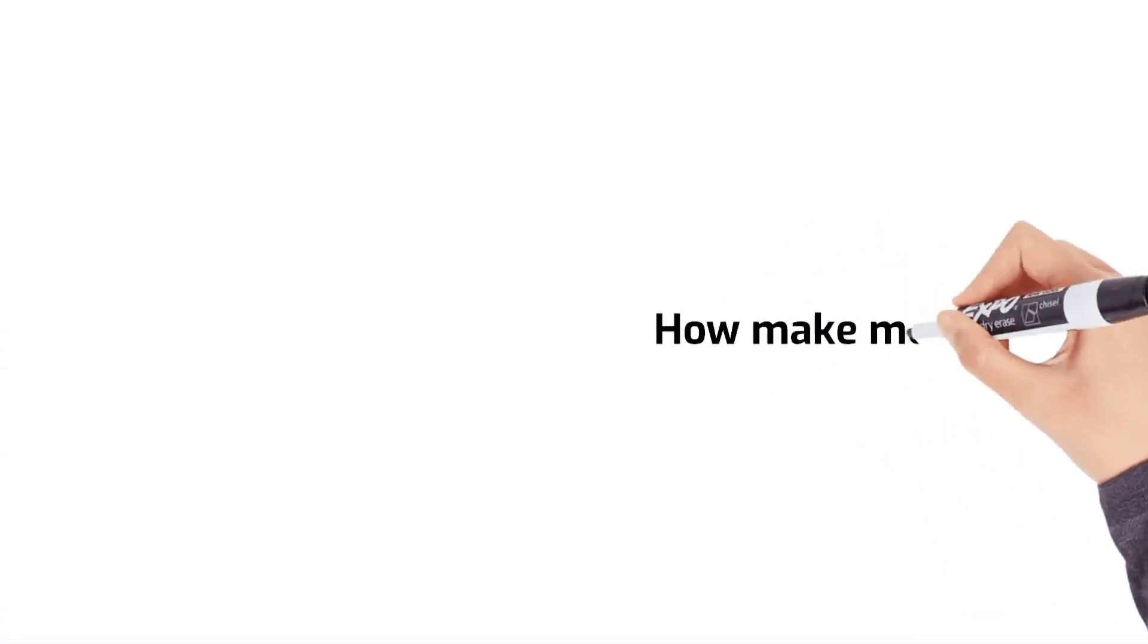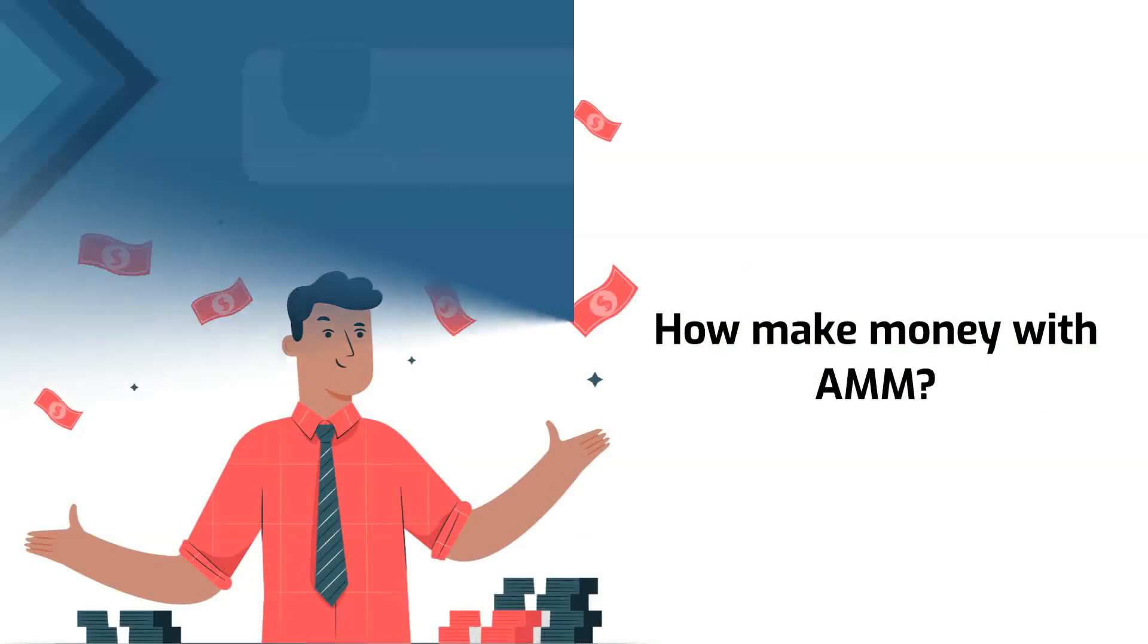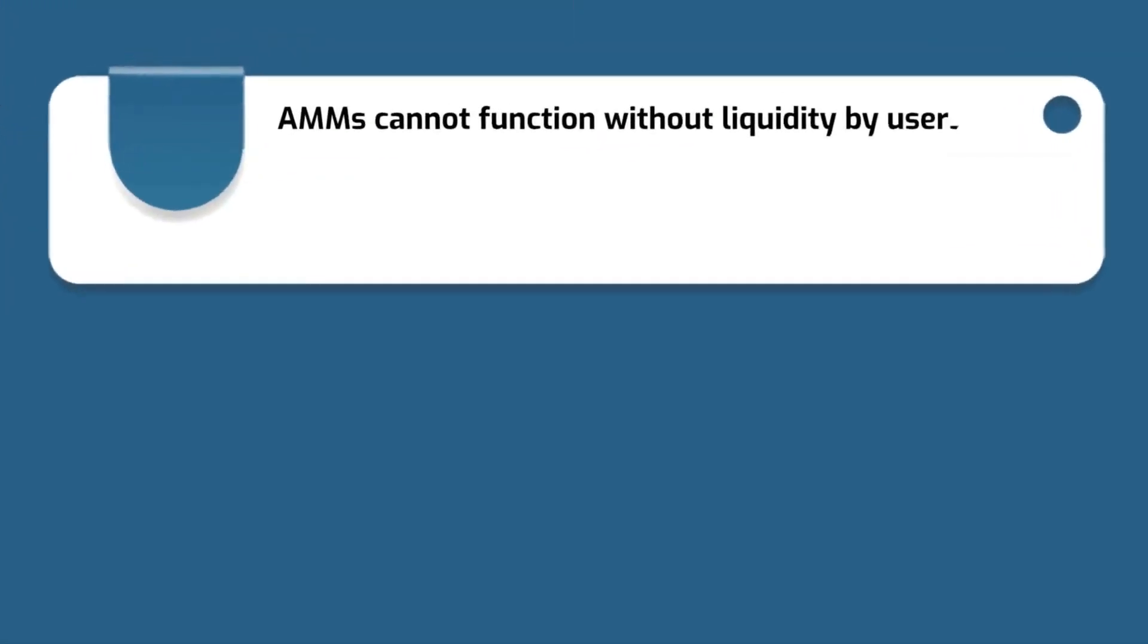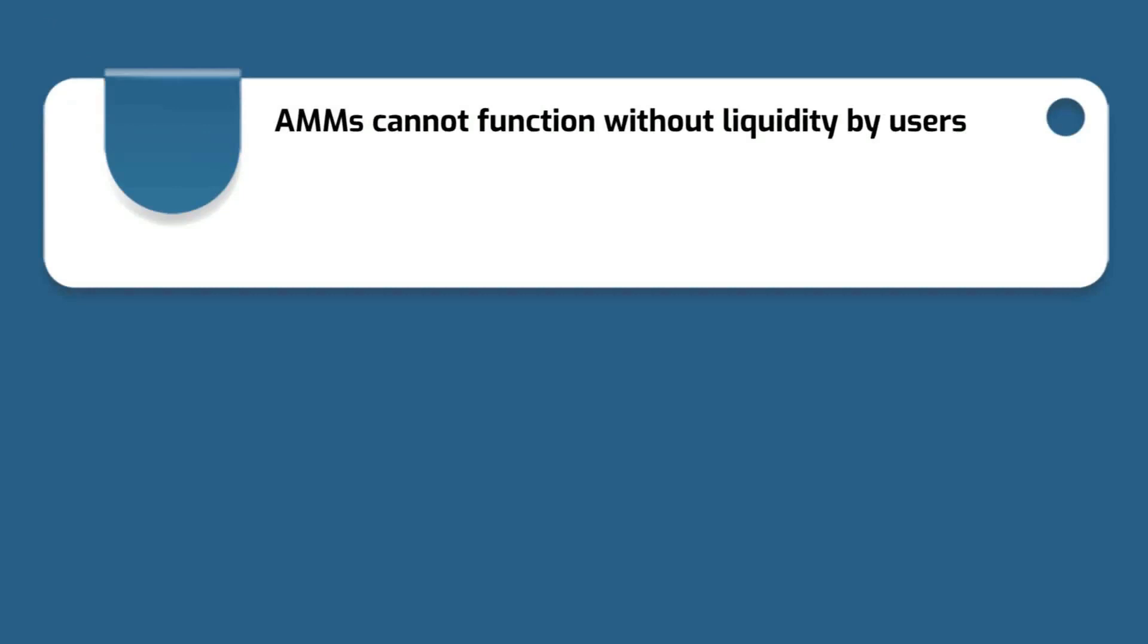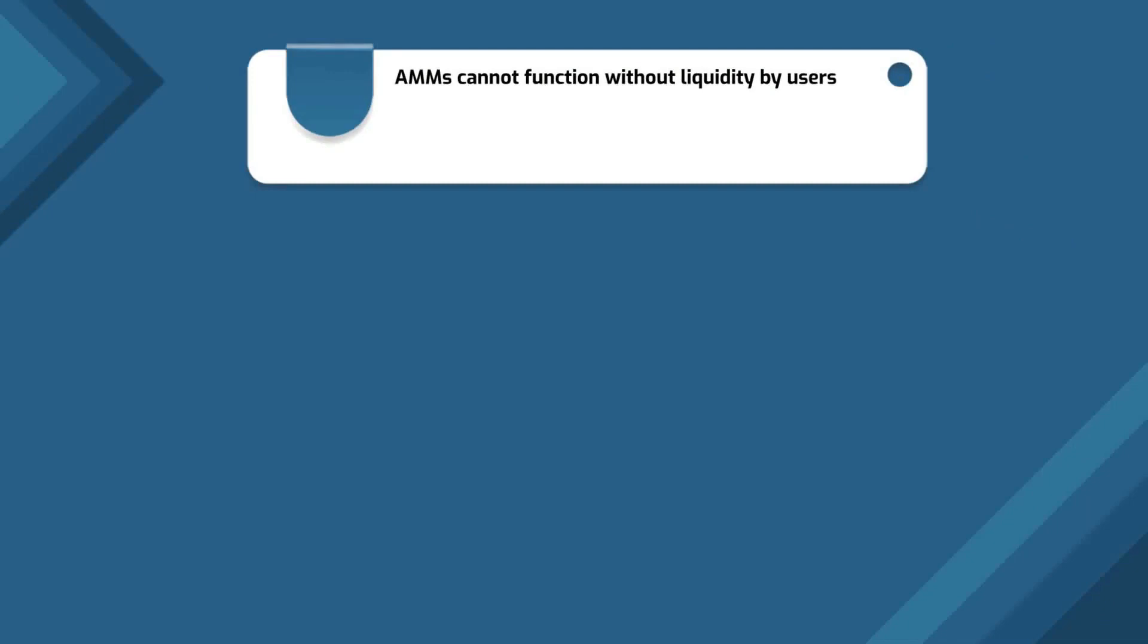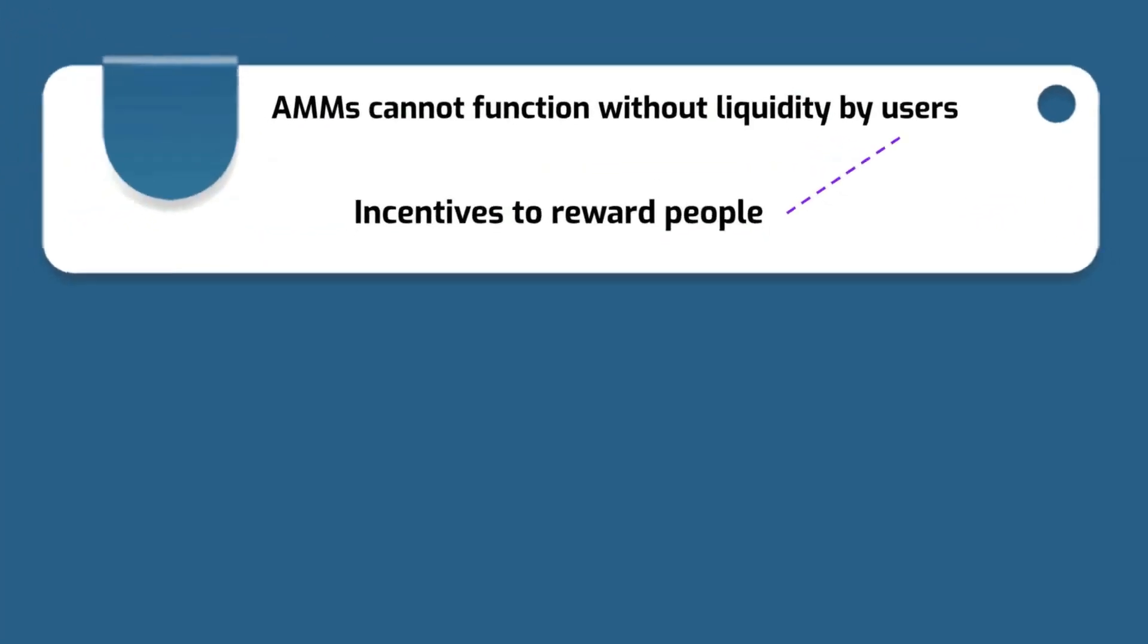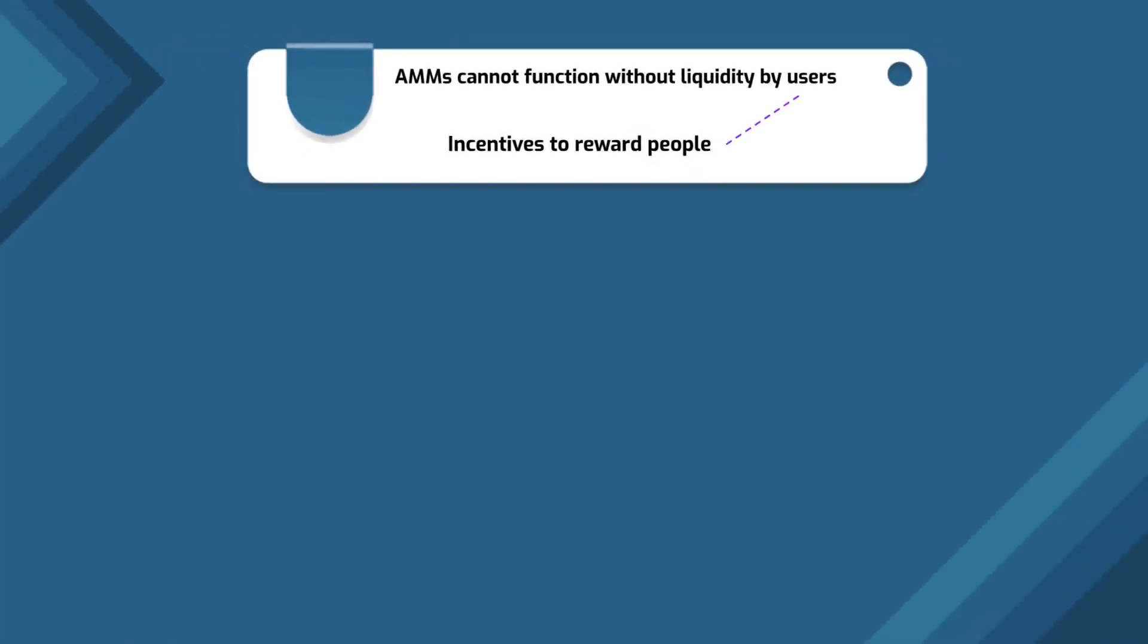But how does the nature of automated market maker give us a chance to make money? AMMs cannot function without users providing liquidity into crowdsourced pools of tokens. Since the very existence of an AMM depends on liquidity provision, it only makes sense that they would have to adopt incentives to reward people that help drive the entire system forward.